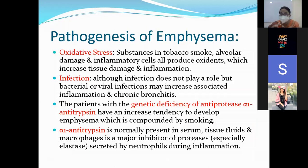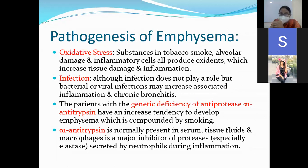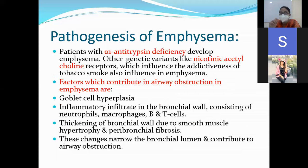Other causes include oxidative stress — substances in tobacco smoke, alveolar damage, and inflammatory cells produce oxidants which increase tissue damage. Infection may play a role in development of emphysema — although infection does not play a direct role, bacterial or viral infection may increase inflammation and chronic bronchitis. The patient with a genetic deficiency of antiproteases — alpha-1 antitrypsin deficiency — has an increased tendency to develop emphysema. Alpha-1 antitrypsin is normally present in serum, tissue fluids, and macrophages and is a major inhibitor of proteases, especially elastase secreted by neutrophils during inflammation.